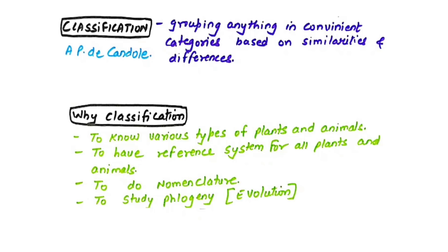The term 'classification' was given by scientist A.P. de Candolle. Why is classification required? First, to know the various types of plants and animals on earth. Second, to have a reference system — for example, saying 'kangaroo' immediately tells us it is from Australia. Third, to do nomenclature — the art of naming. Fourth, to study phylogeny, which relates to evolution.